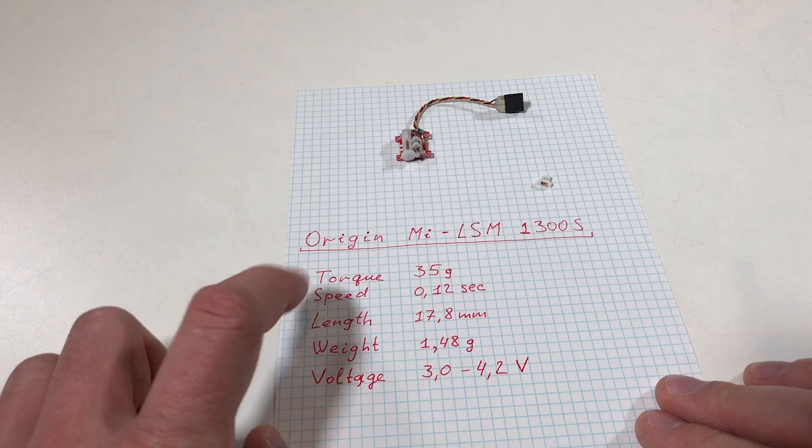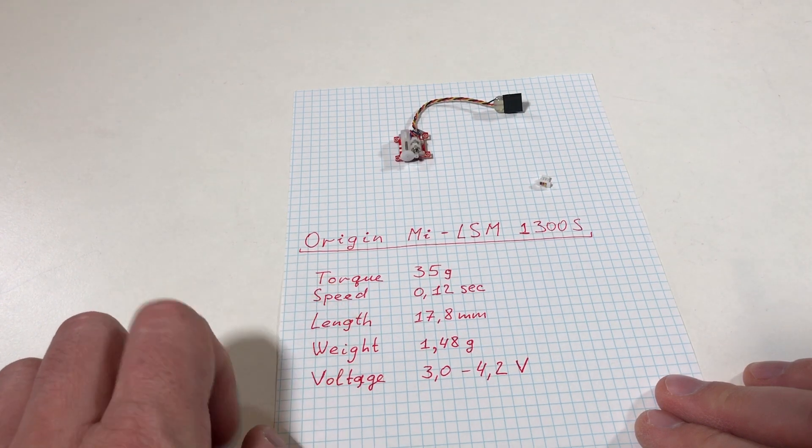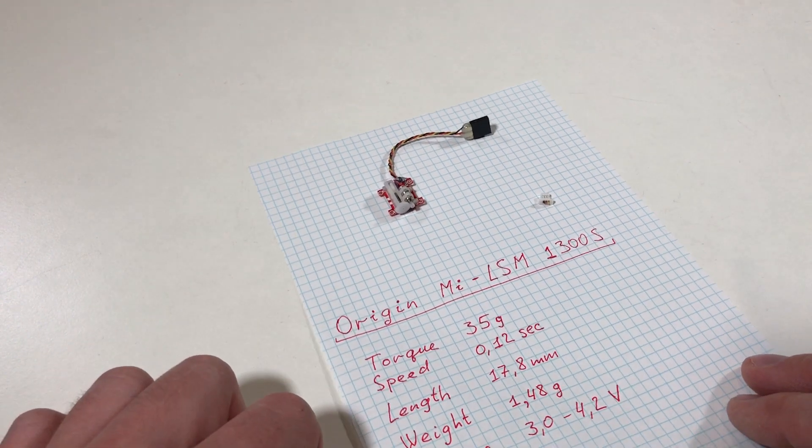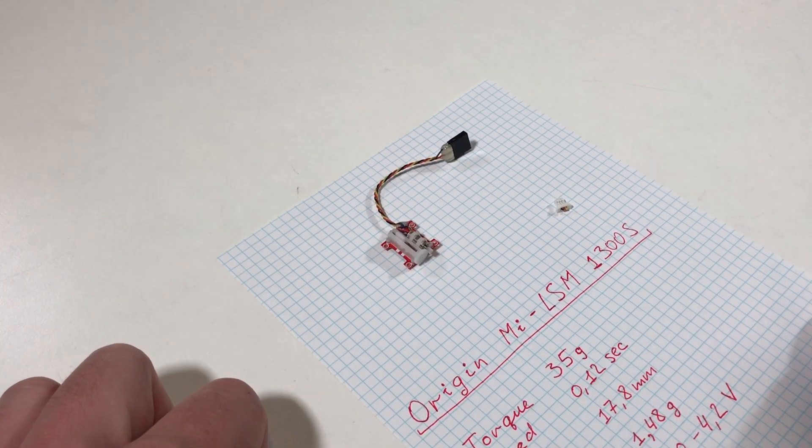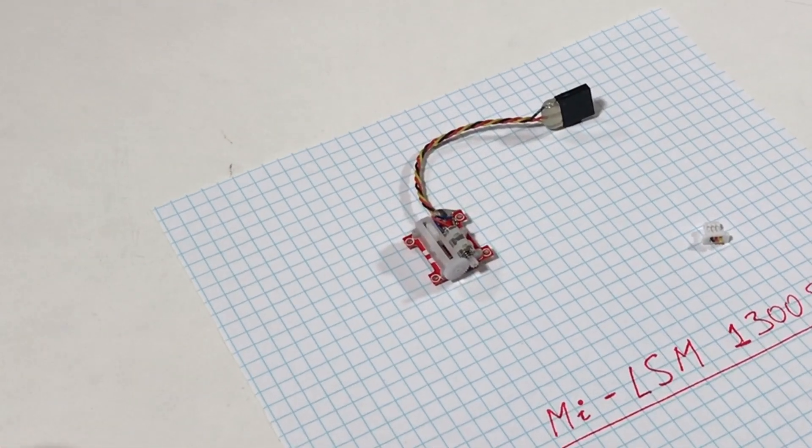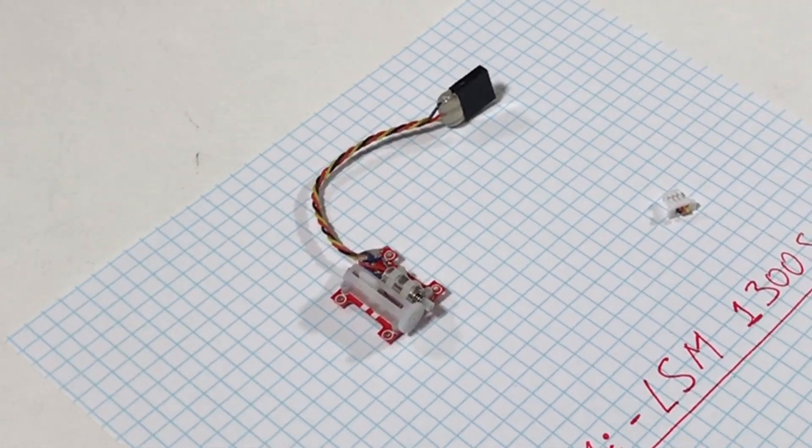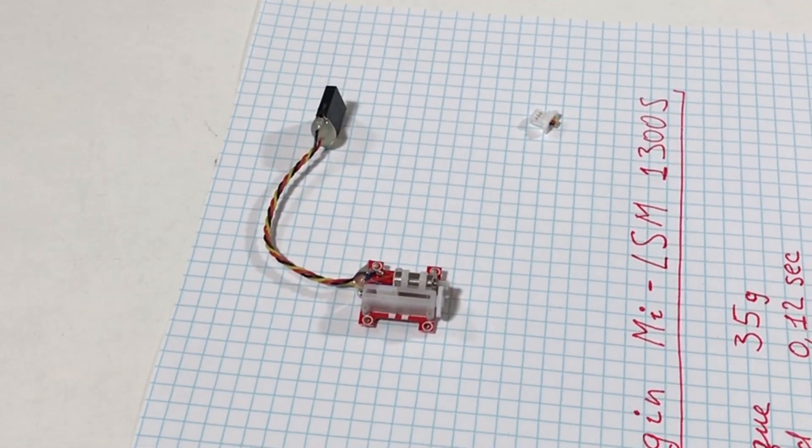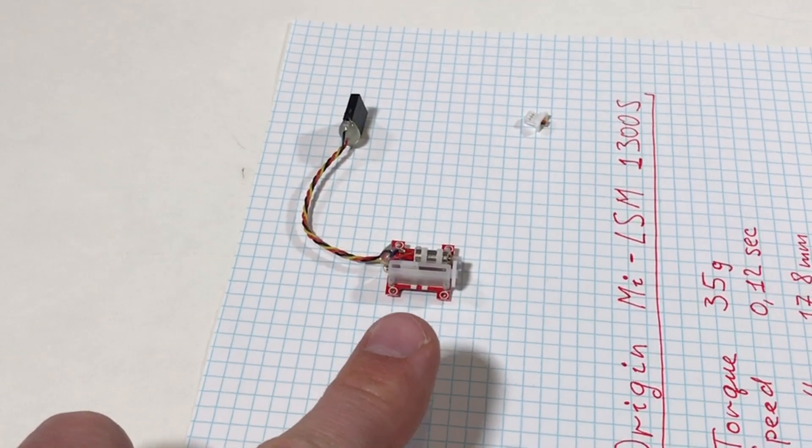For this servo motor we should not talk about torque but about force, because this is a linear servo motor. If you look closely, there is a small motor coupled with the gears to the lead screw, and this lead screw moves this tiny lever.